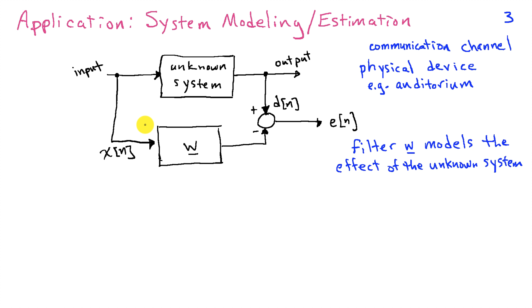Now in this problem, we can take the input and call that x of n. That's our input to our filter, and then the output of our filter is compared to the desired signal out here, and we want to minimize this error. So if we do a good job of minimizing this error, then w is mimicking the unknown system because it's taking the same input and producing essentially the same output.